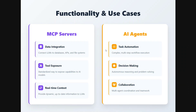They are able to complete tasks. Looking at functionality and use cases for MCP servers: data integration — connecting to databases, APIs, and file systems. Tool exposure — a standardized way of exposing capabilities and APIs to AI models. And real-time context — fetching information in real time. While AI agents are more complex: multi-step workflow execution, decision making, and collaboration of multiple AI agents. One MCP server doesn't talk to another MCP server without the help of an AI agent.